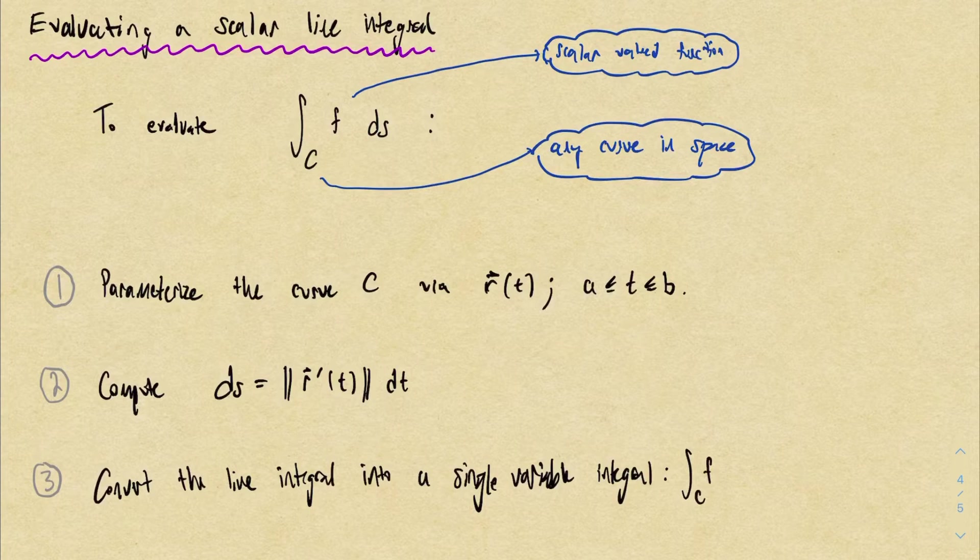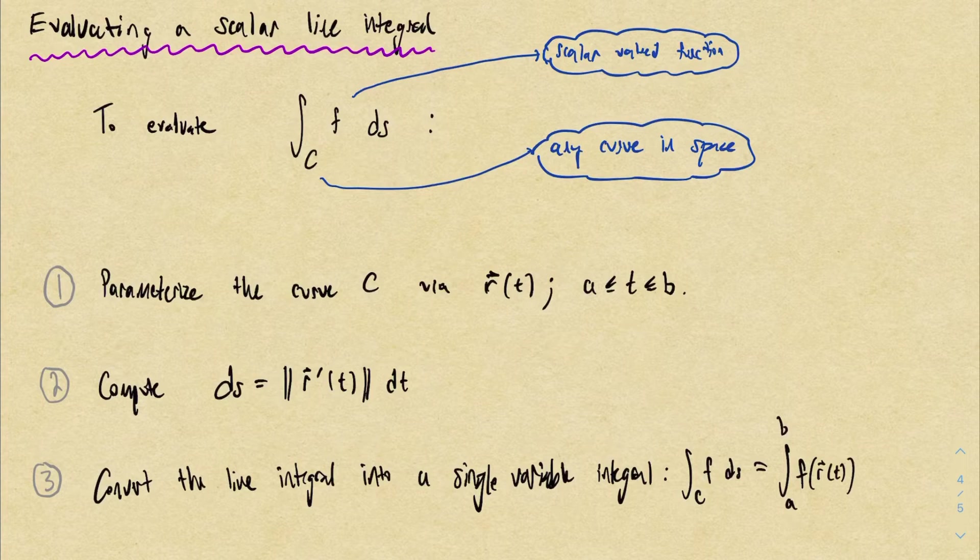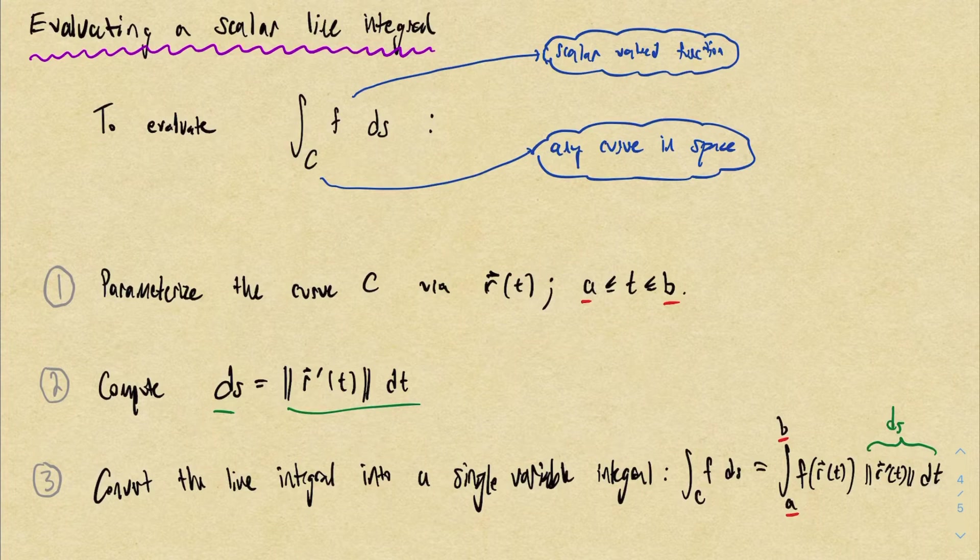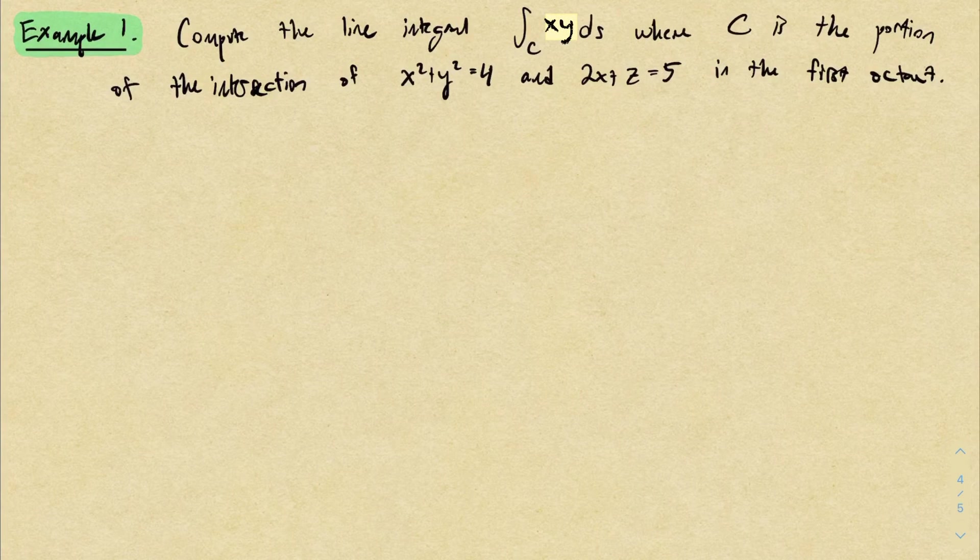Once we've done that, we can convert the line integral into a regular old single variable calculus integral. The bounds in the new integral correspond to the parameter bounds that you came up with in step one. Then you change the function and then you have your differential DS. Writing it abstractly like this looks a little scary, but this expression here really is just a single variable integral in terms of t, so you can do it.